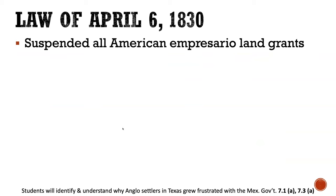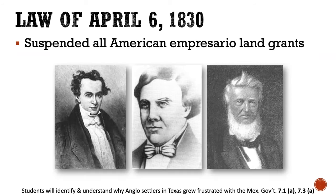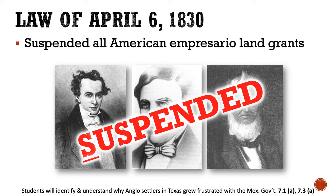The third part of the Law of April 6, 1830 suspended all American impresario land grants. These American impresarios who had been granted land and allowed to bring settlers in had their contracts suspended — they were no longer allowed to bring Americans into Texas, and all unsettled land they'd been granted was put in limbo. So we had: forces sent to Texas, immigration stopped, and now suspended impresario contracts.